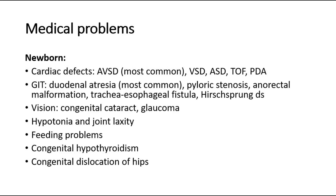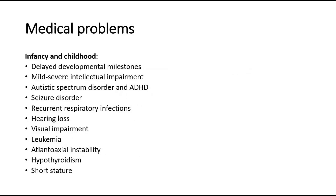They may also have problems with vision, feeding, congenital hypothyroidism, and congenital dislocation of the hips. Moving into infancy and childhood, there is delayed developmental milestones, and intellectual impairment ranges from mild to severe. Recurrent respiratory infections, hearing and visual impairment require frequent follow-up. They are also associated with leukemia, atlanto-axial instability, hypothyroidism, and short stature.